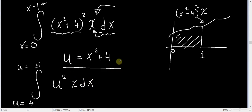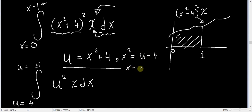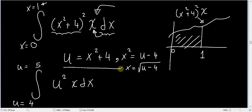From this equation, we know that x² = u − 4, so x is equal to the square root of (u − 4). Taking the positive square root, because all values for u and x are positive, so I don't need to bother with the negative square root. So I have x as this, and now I want to get dx.